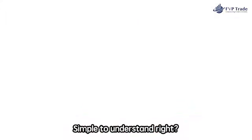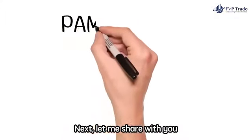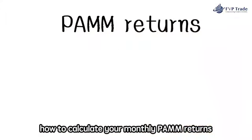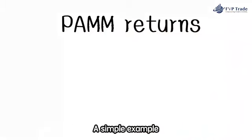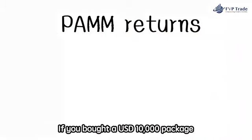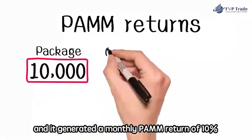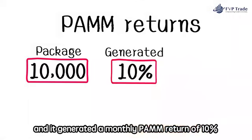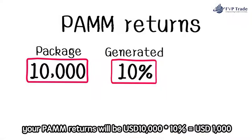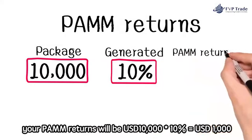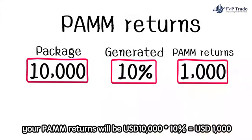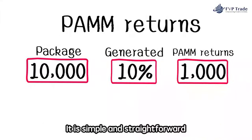Take note that only when you choose to terminate your package while the account is experiencing losses will you have to bear part of the losses together with the company. Simple to understand, right? Now let me share with you how to calculate your monthly PAM returns. If you bought a USD 10,000 package and it generated a monthly PAM return of 10%, your PAM returns will be USD 10,000 × 10% = USD 1,000. It is simple and straightforward.